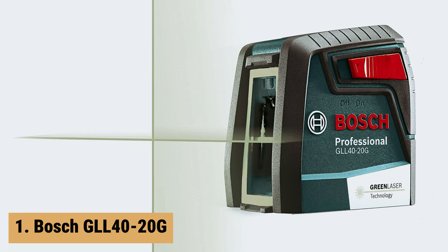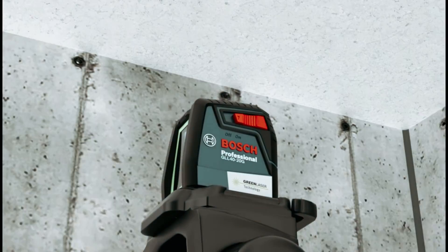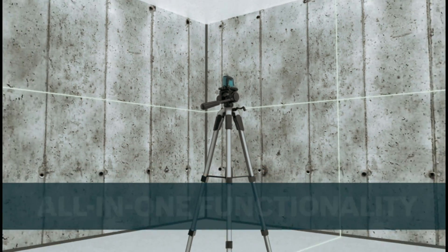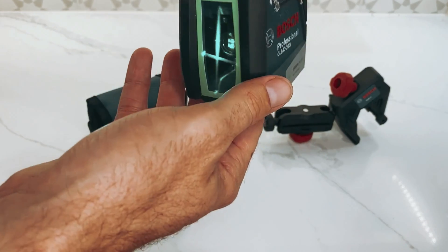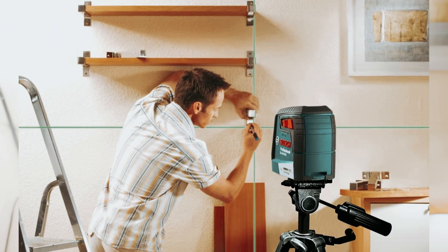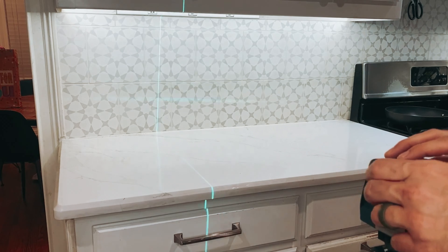And finally, the number one on our list is the Bosch GL4020G. The Bosch GL4020G is a versatile and convenient tool that stands out with its bright green beam laser lines, providing up to 2x more brightness compared to standard red beams. This enhanced visibility allows for easier and more accurate work in various leveling and alignment applications.